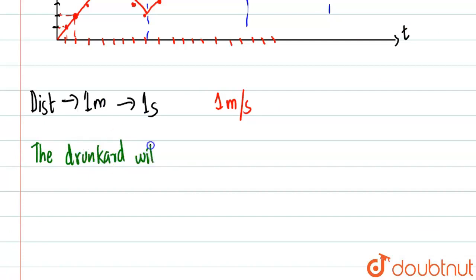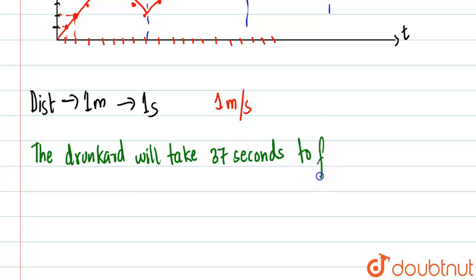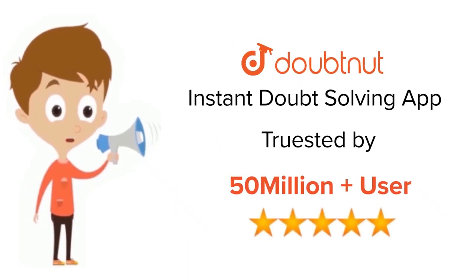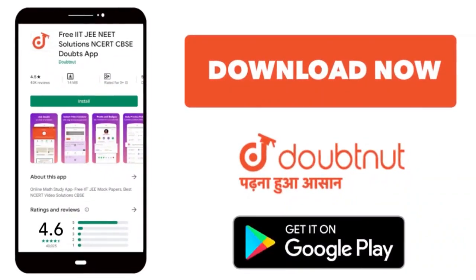So our answer is: the drunkard will take 37 seconds to fall in the pit. This is basically our answer — 37 seconds. Thank you. For class 6 to 12, IIT-JEE and NEET level, trusted by more than 5 crore students — download the DoubtNet app today.